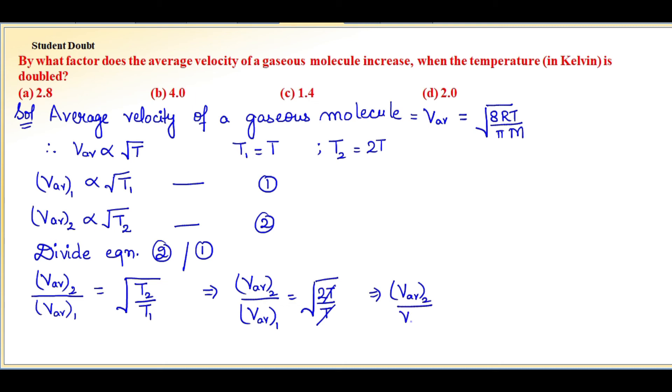Since √2 = 1.414, we have v_av2/v_av1 = 1.414.